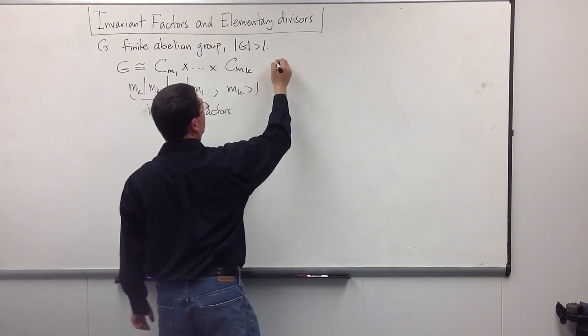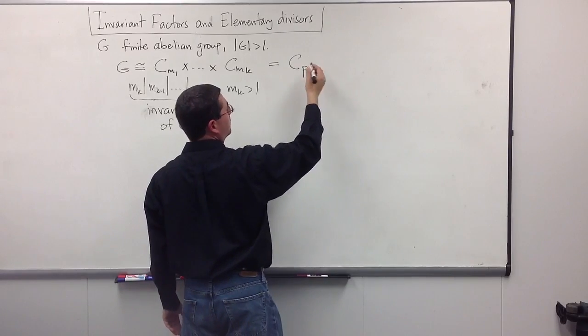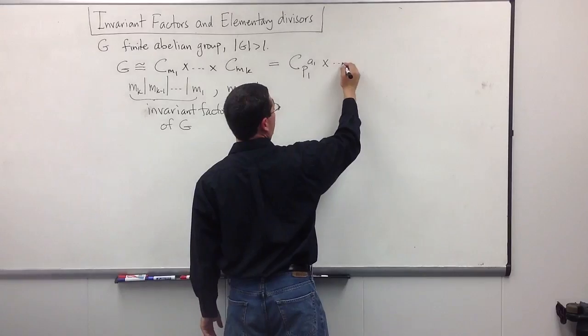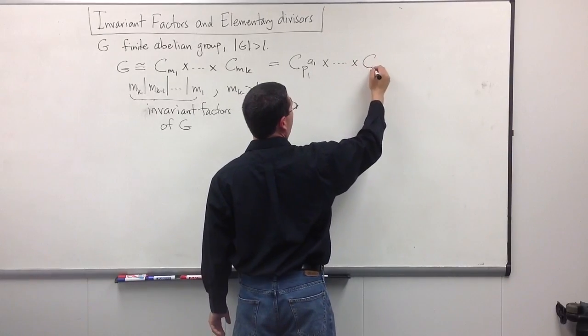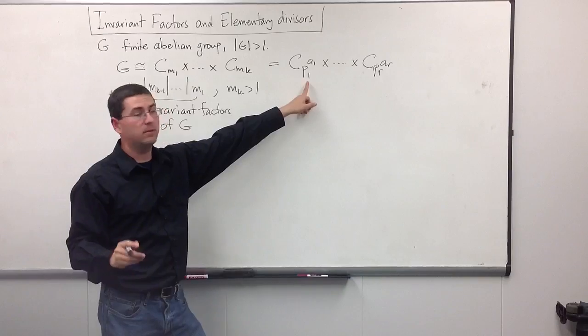So, we could rewrite this as C, and I'm just going to say there's, say, R of these primes. We'll call them P1 through PR. And there's some exponent. Alright? Those primes show up a certain number of times.